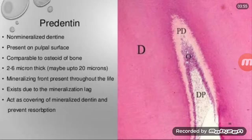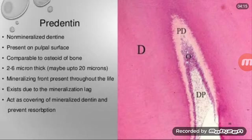Here you can see the pre-dentine. This is the first form of dentine and it is not mineralized. It is located adjacent to the pulp tissue. Pre-dentine is known as non-mineralized dentine present on the pulpal surface, comparable to osteoid of bone.